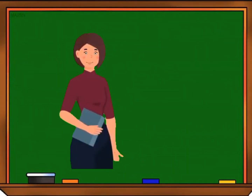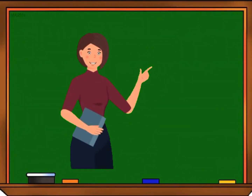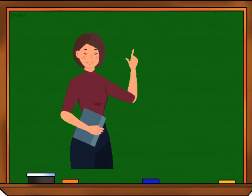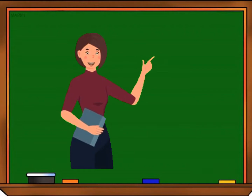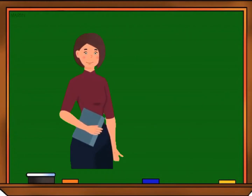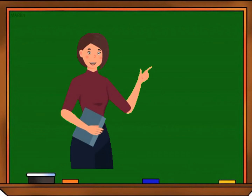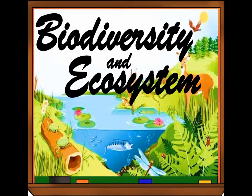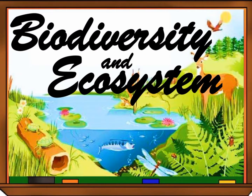Our new lesson for this fourth quarter, Module 5, is all about biodiversity and ecosystem, with each focus on the high and low biodiversity, ecosystem, and its parts and components.